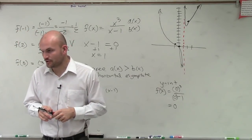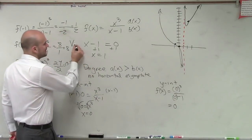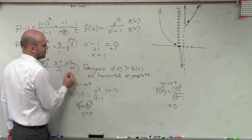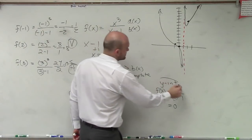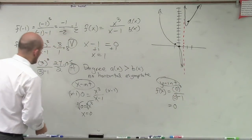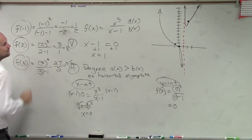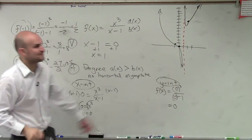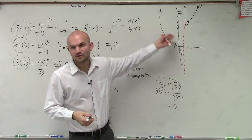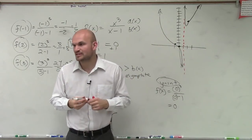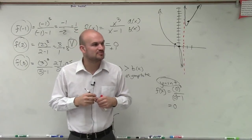All I'm asking you to do is determine your vertical asymptote, your horizontal asymptote, your x intercept, your y intercept, and then two values to the right and two values to the left of your vertical asymptote. Once you have those points, sketch the best graph you can using a graphing calculator and the information provided.